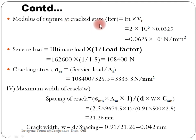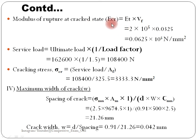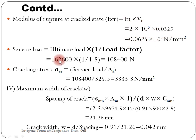Next, modulus of rupture at cracked state. When cracks are induced, there is a change in length along with the original length. Ecr equals Et times vf. Et is given as 2 times 10 raised to 5, and vf is 0.0325, so multiplying gives the cracked modulus value.